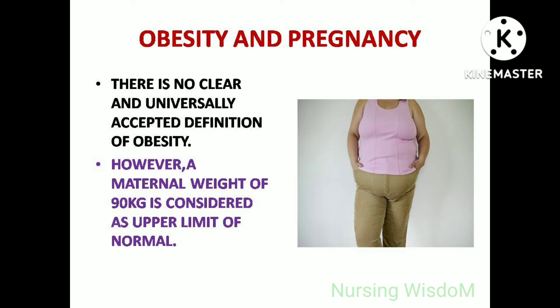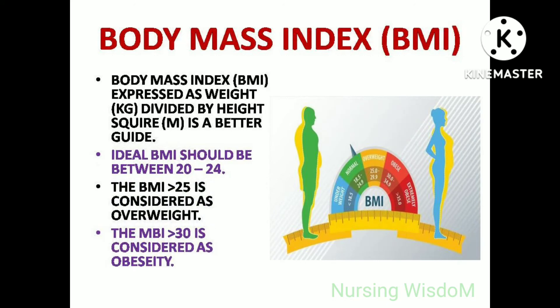There is no clear and universally accepted definition of obesity. However, a maternal weight of 90 kg is considered as the upper limit of normal. Body mass index (BMI), expressed as weight in kg divided by height in meter squared, is a better guide. An ideal BMI should be between 20 to 24. A BMI more than 25 is considered overweight, and a BMI more than 30 is considered obesity.